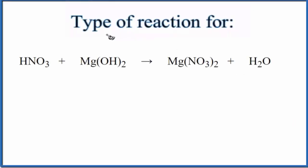In this video, we'll take a look at the type of reaction for HNO3 plus Mg(OH)2. This is nitric acid, and this is magnesium hydroxide.